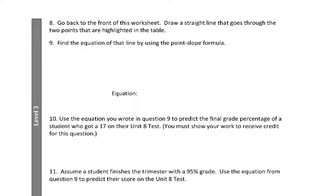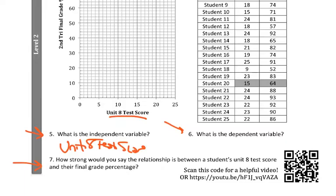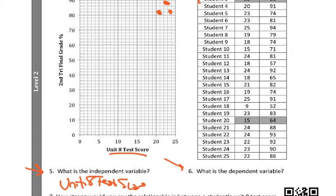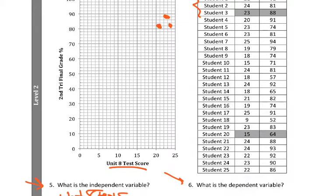All right, let's go on to the back side. Level 3 questions are asking you for a little bit more. So, what I want you to do is to go back to the earlier page. So, go back to the front of this worksheet, and it wants you to draw a straight line. So, use a ruler or another paper or something, and you want it to go through these two points. So, notice over here, students 3 and 20 are highlighted.